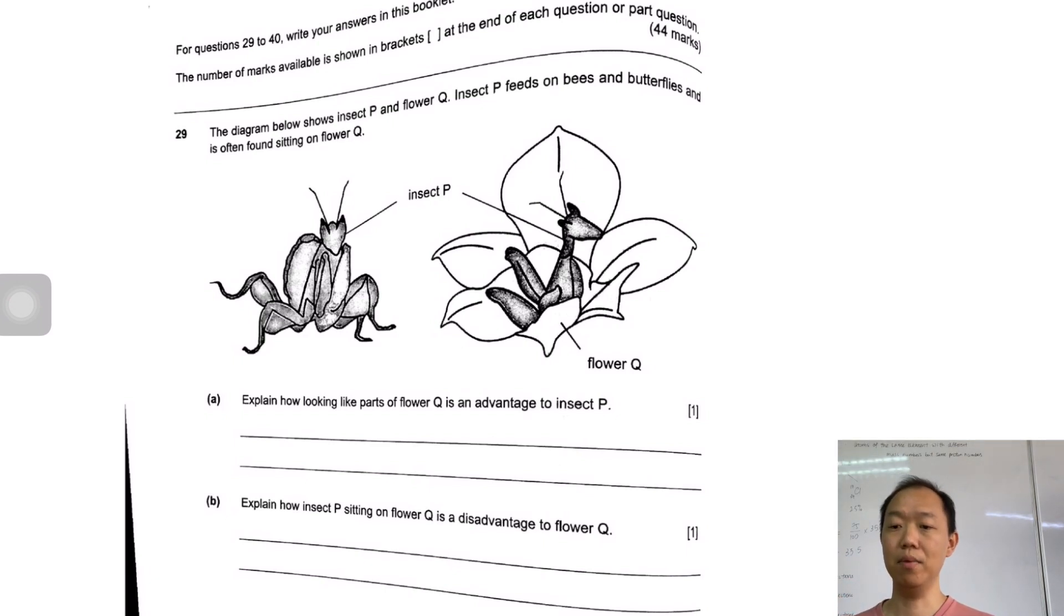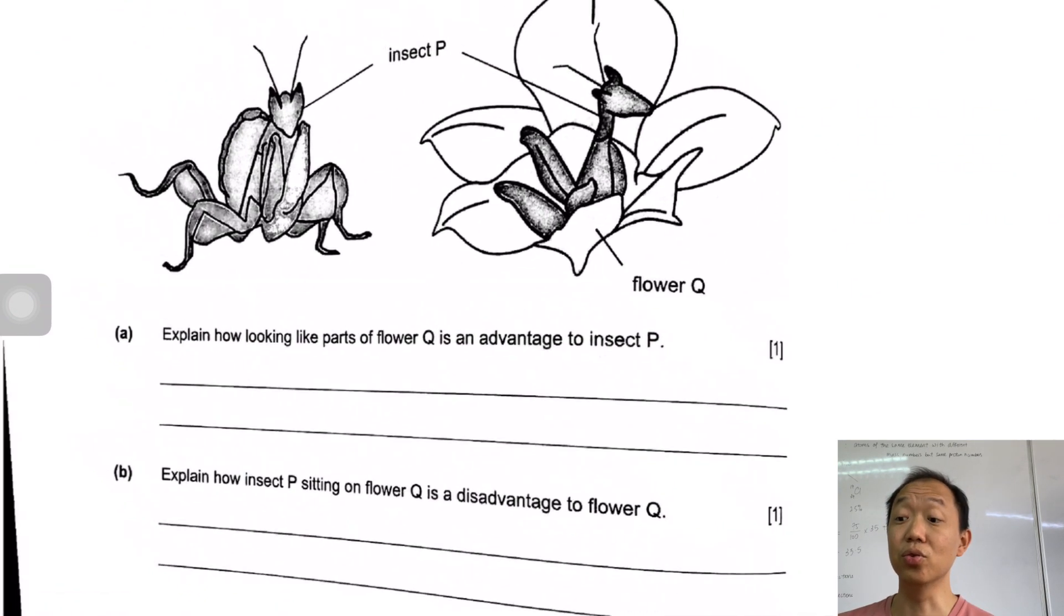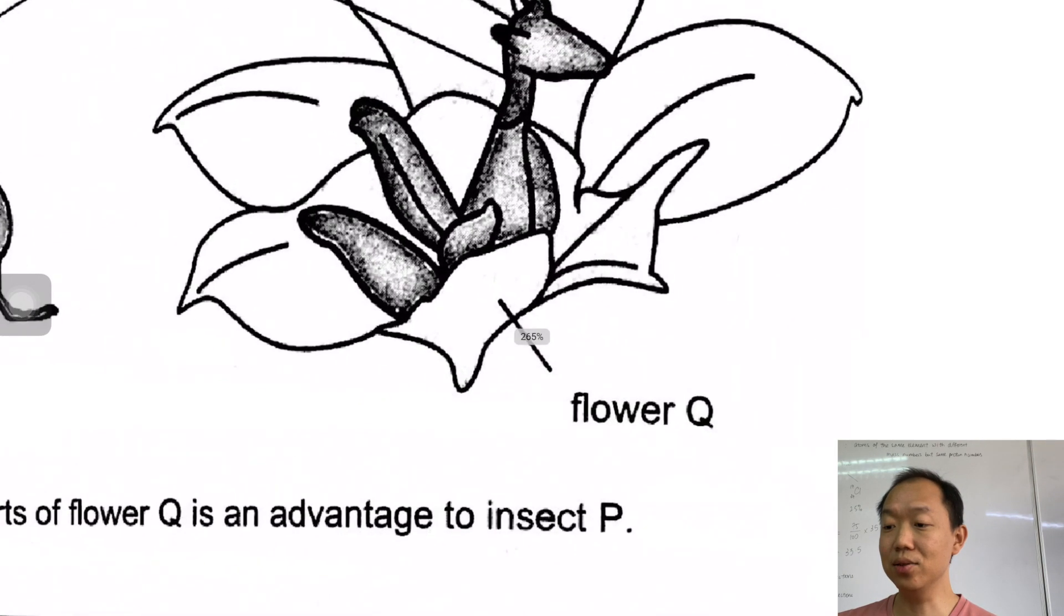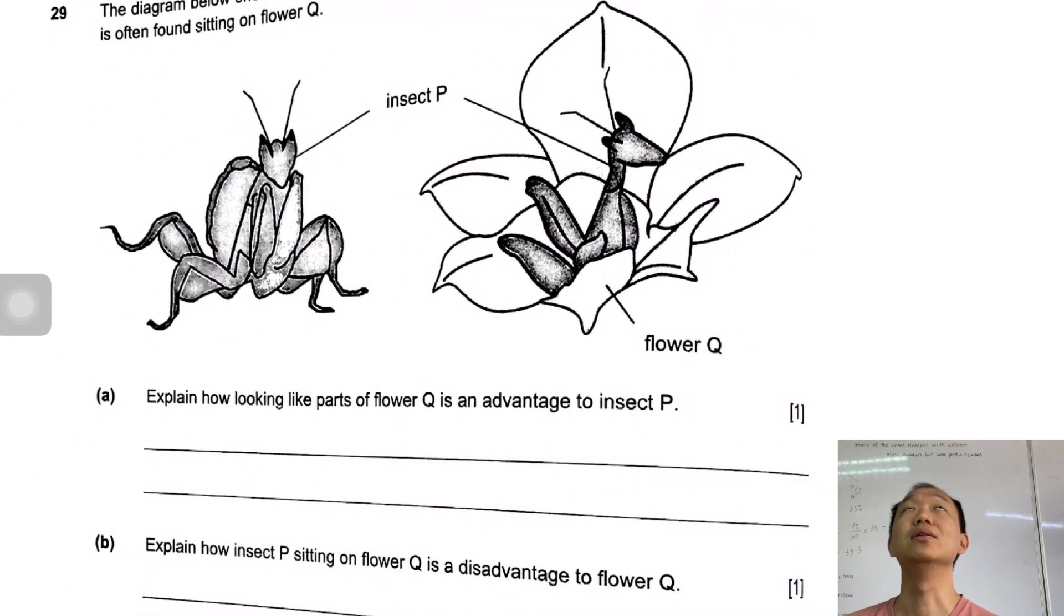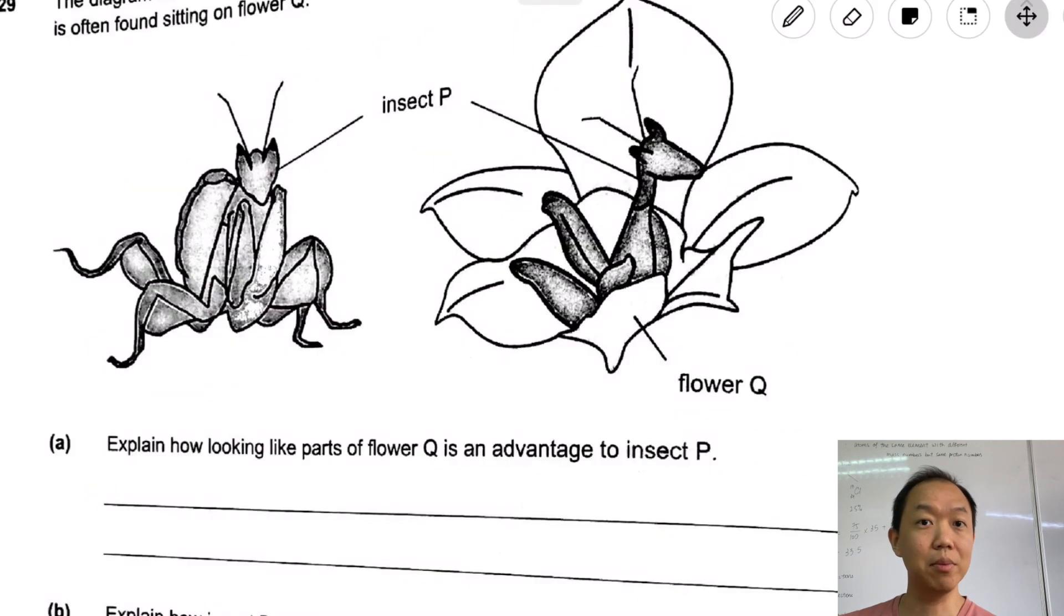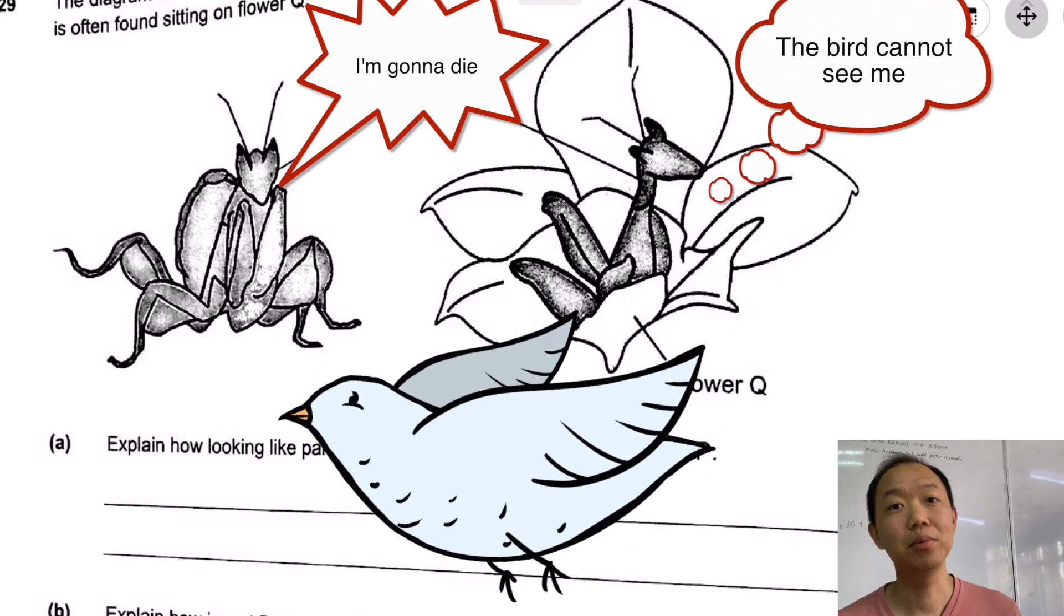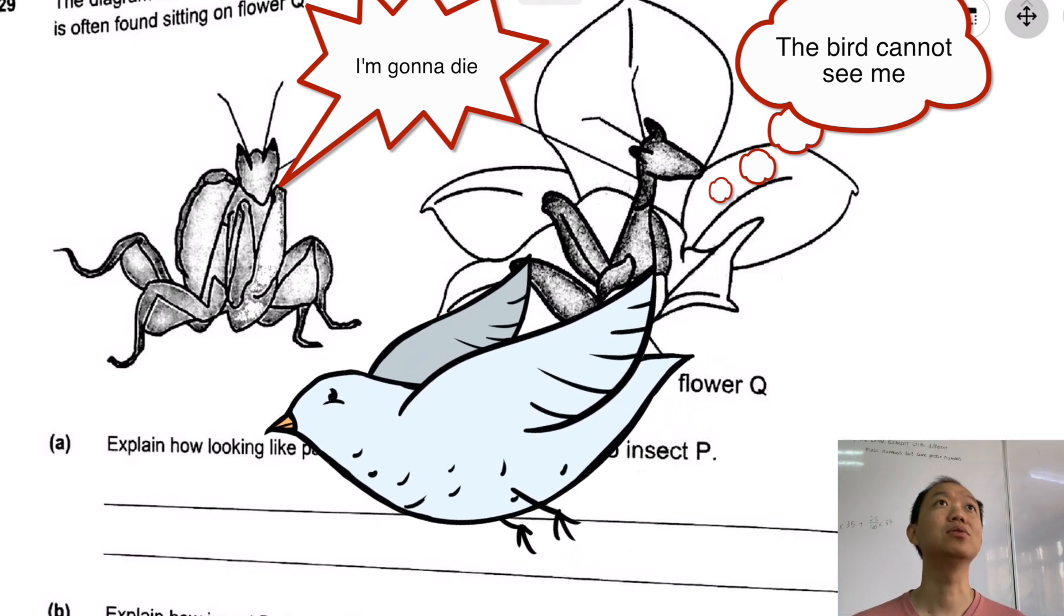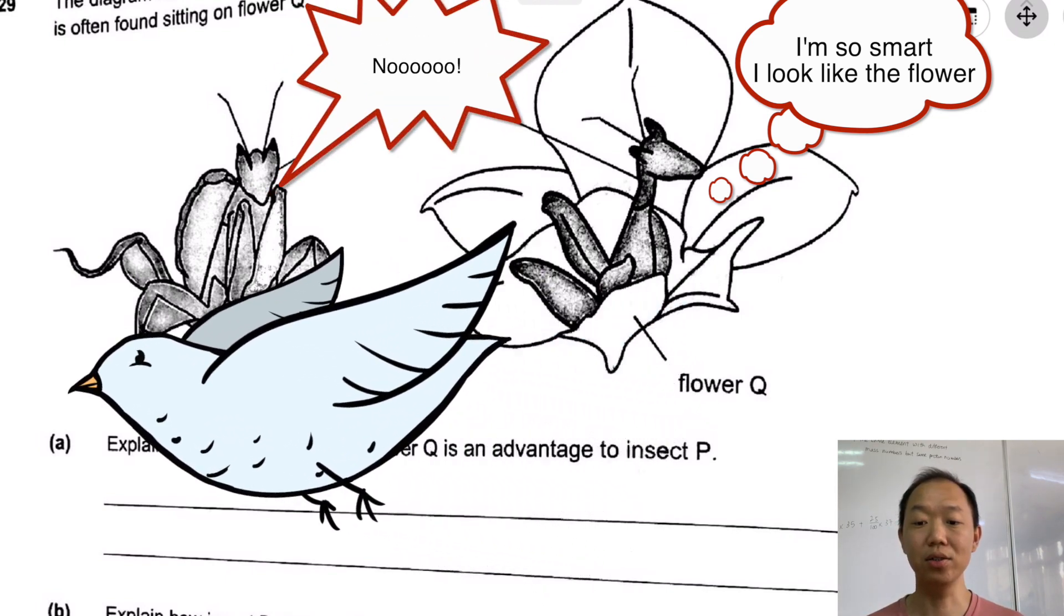The diagram shows this insect pea and flower cube. Insect pea feeds on bees and butterflies and is often found sitting on flower cube. I'll explain how looking like parts of flower cube is an advantage to insect pea. This question is about adaptation, actually it's more of camouflage. Looking like flower cube will be an advantage for insect pea because he will be able to camouflage and his predators will not be able to find it, and therefore he will be able to escape and survive.